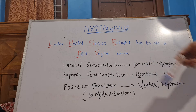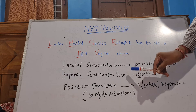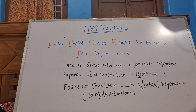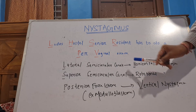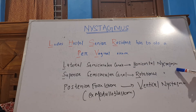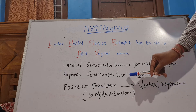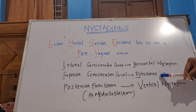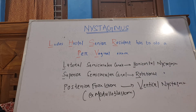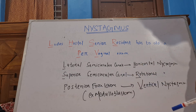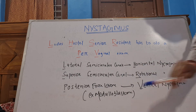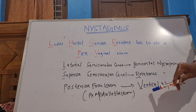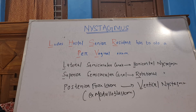Whenever the lateral semicircular canals are stimulated, it will lead to horizontal nystagmus. Whenever the superior semicircular canals are stimulated, it will lead to rotational nystagmus. And whenever the posterior semicircular canals are involved — such as in posterior lesions like medulloblastoma — it will cause vertical nystagmus.